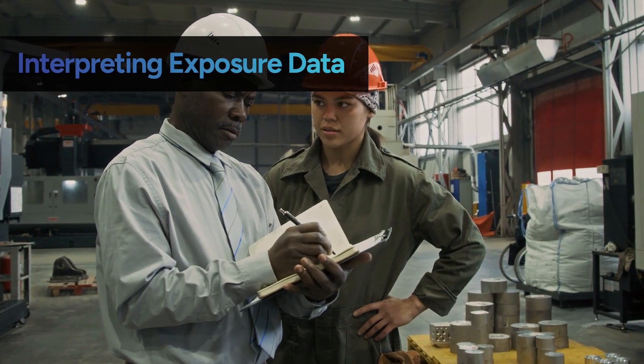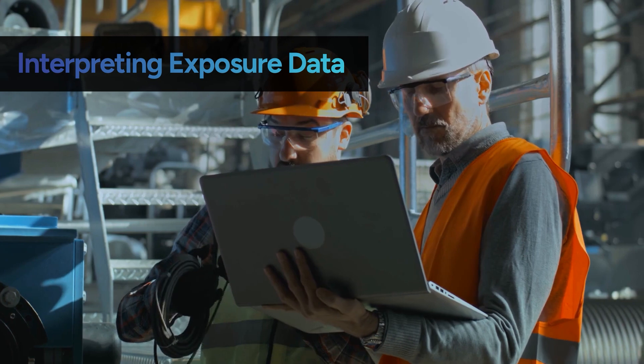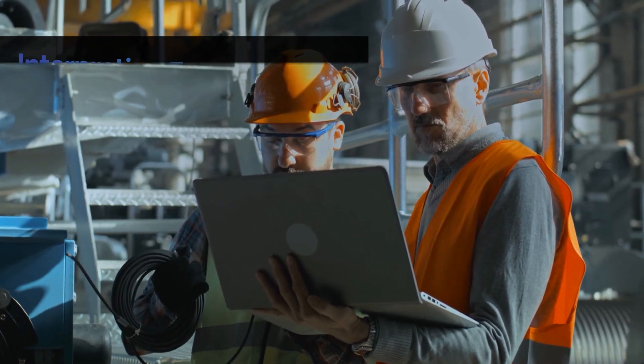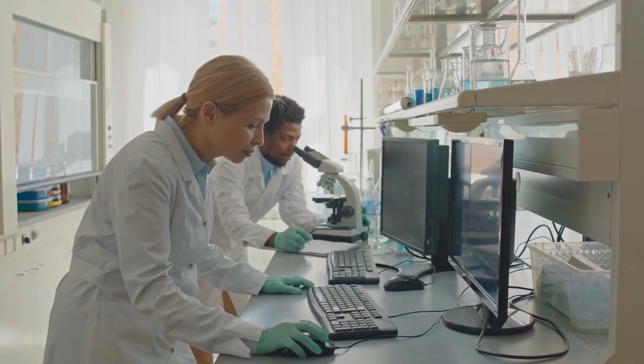Once you've got your samples, the next step is to interpret the data. This is where you compare your measurements to the exposure limits we talked about earlier: PEL, TLV, and STEL. If your data shows that exposure levels are below the limits, that's great news—it means the workplace is generally safe. But if the levels are above the limits, it's time to take action.